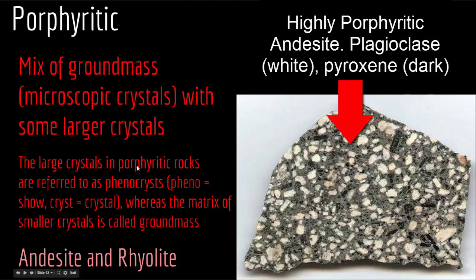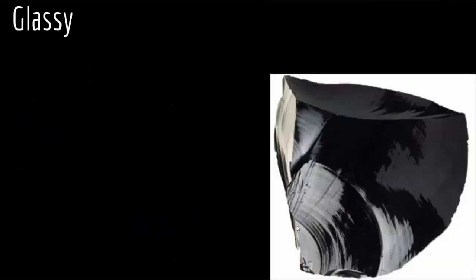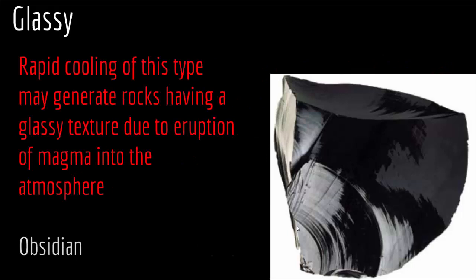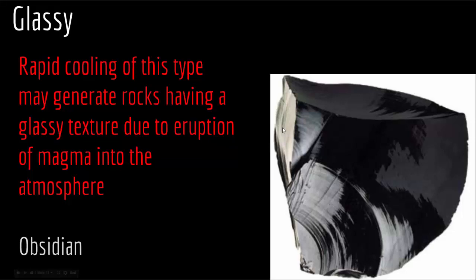An example of porphyritic igneous texture would be andesite and rhyolite. The next type is glassy, or vitreous, texture. Glassy textures occur during some volcanic eruptions when lava cools so rapidly that crystallization cannot occur — unordered ions are frozen in place before they are able to unite into an orderly crystalline structure. The result is a natural glass with few or no crystals. This is an example of obsidian, which has a glassy texture resulting from rapid cooling where ions are not able to form crystals.